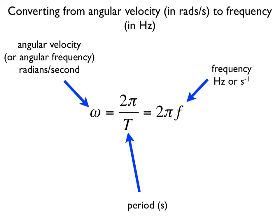We're used to measuring frequency in hertz or cycles per second, but for an oscillating object we sometimes use angular velocity or angular frequency. The symbol is omega. Use this equation to convert from frequency in hertz to angular velocity in radians per second. When doing a problem, make sure you're clear on whether you have been given frequency in hertz or angular velocity in radians per second, and you may need to convert from one to the other.